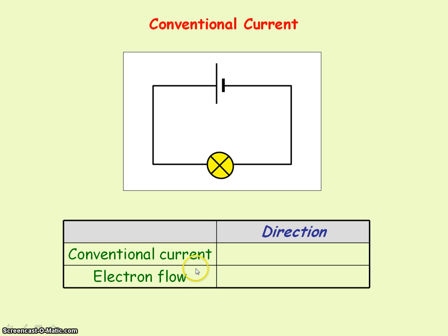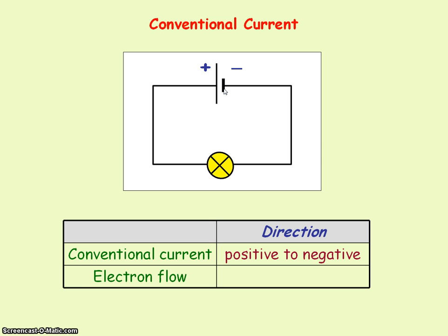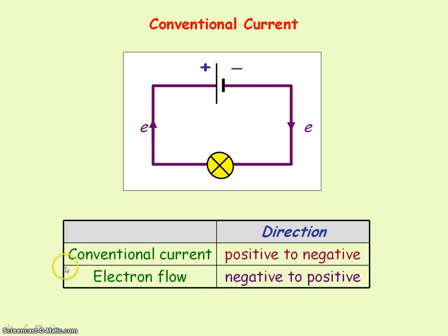Conventional current flows from the positive terminal to the negative terminal. Looking at our battery, the long line represents the positive terminal and the short line represents the negative terminal. We represent current flowing in this circuit by conventional current, from positive to negative. However, electrons, because they're negatively charged, come from the negative terminal and move towards the positive terminal. So conventional current is in the opposite direction of electron flow.